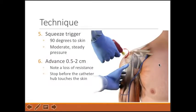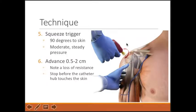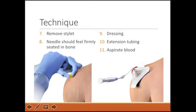Once you've selected your needle, use the needle driver — squeeze the trigger and the needle will start to spin. Apply moderate, steady pressure and advance the needle about half to two centimeters. You'll note a loss of resistance as you move through the cortex of the bone into the trabeculum. After about a centimeter past that loss of resistance, stop squeezing the trigger. Be sure the hub of the catheter doesn't hit the skin, as spinning into the skin can cause abrasions. Then remove the inner stylet. The needle should not be wiggling at this point — that confirms it's seated in bone. Don't wiggle the catheter, as you don't want to cause microfractures of the trabecula.